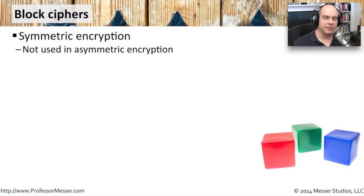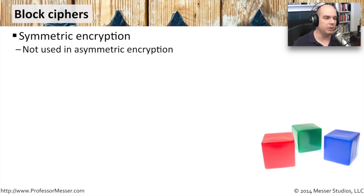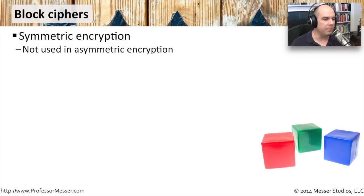When you've got a plain text bit of information and you're trying to encrypt it and get it into that ciphertext, there are a number of different ways to go through the actual encryption process. And when we're talking about symmetric encryption, one of those methods is something called a block cipher.